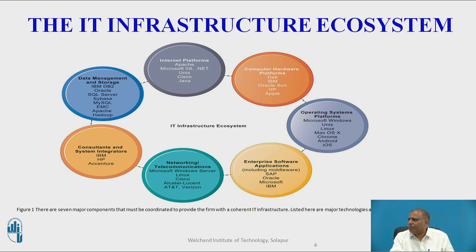Next is the computer hardware platform, with Dell, IBM, Oracle, Sun, HP, and Apple shown in the figure. So these seven major components must be coordinated to provide the firm with the current IT infrastructure. Listed here are the major technologies and suppliers for each component.